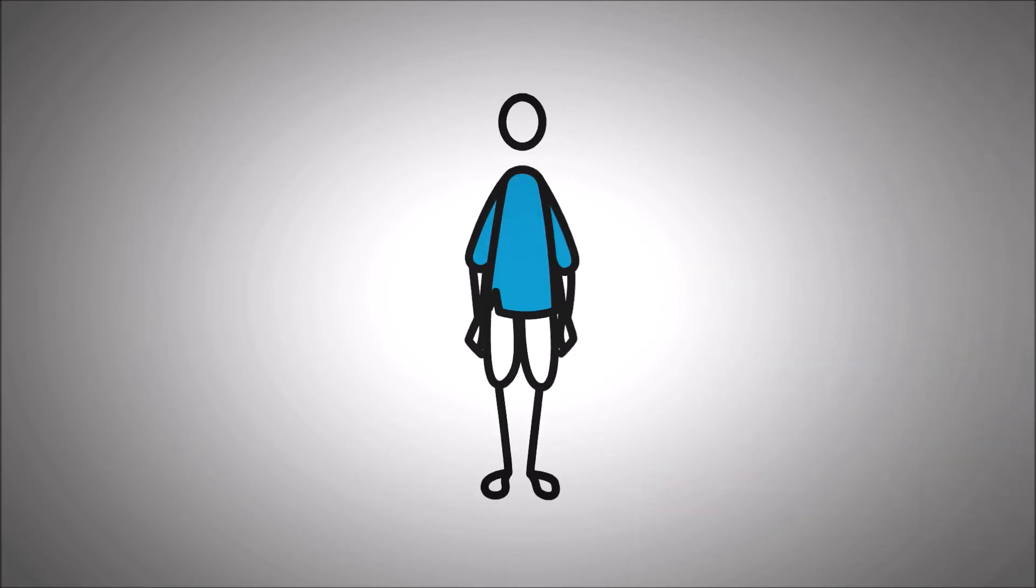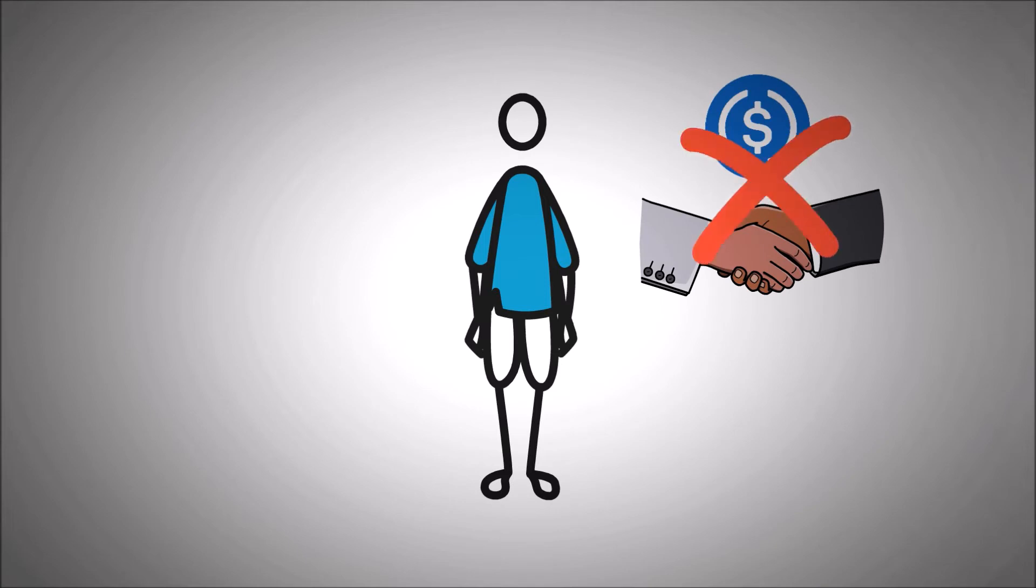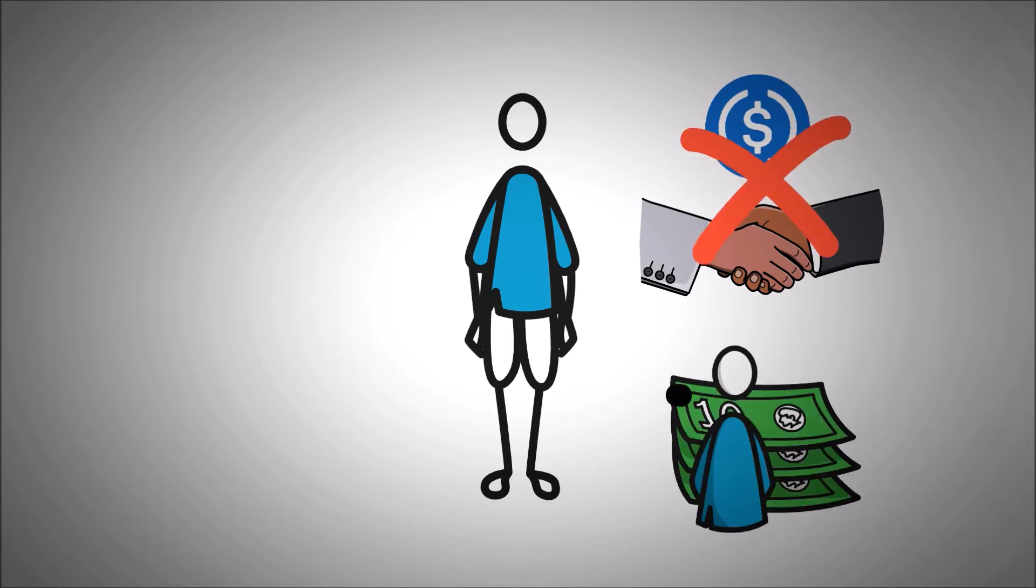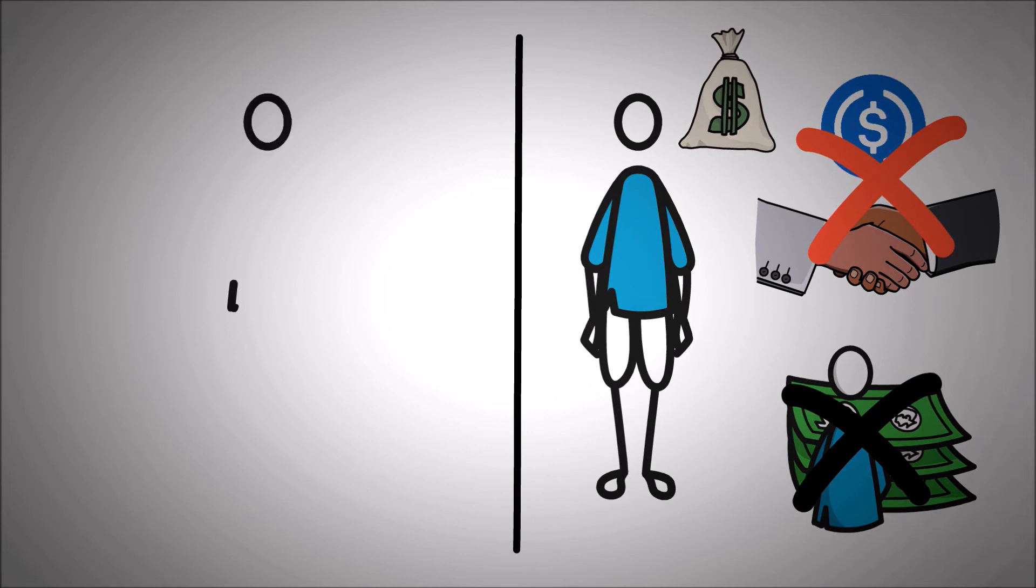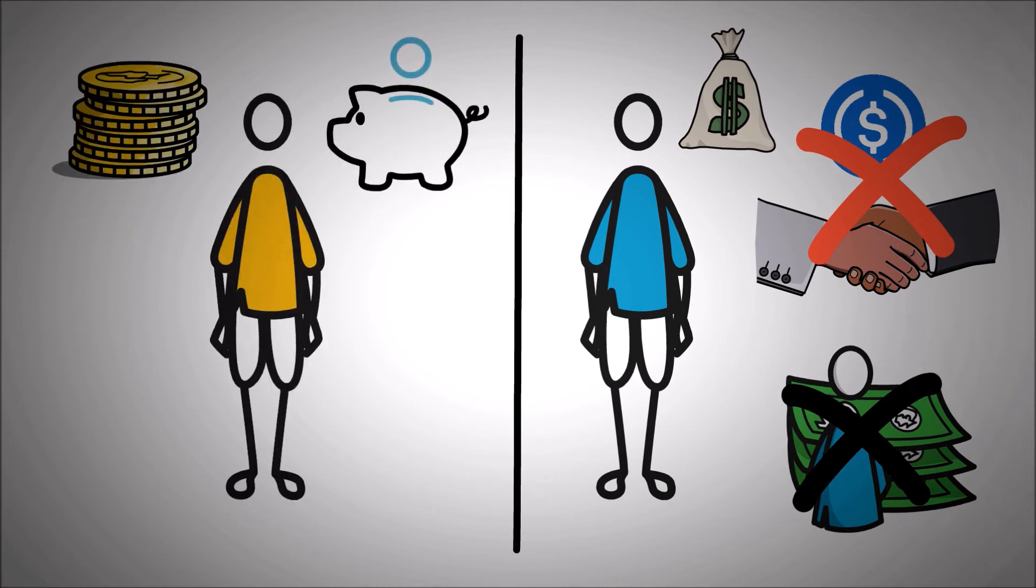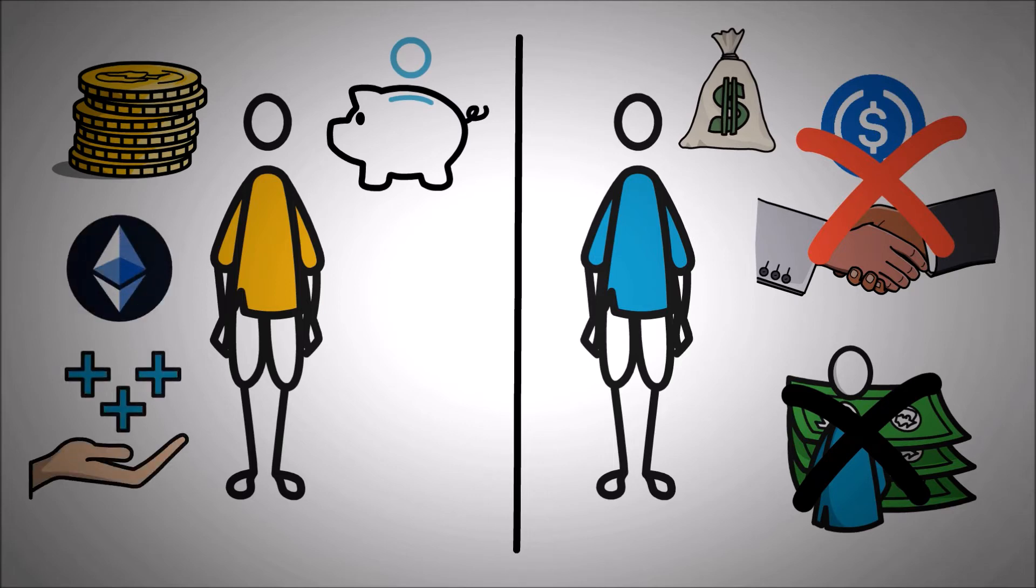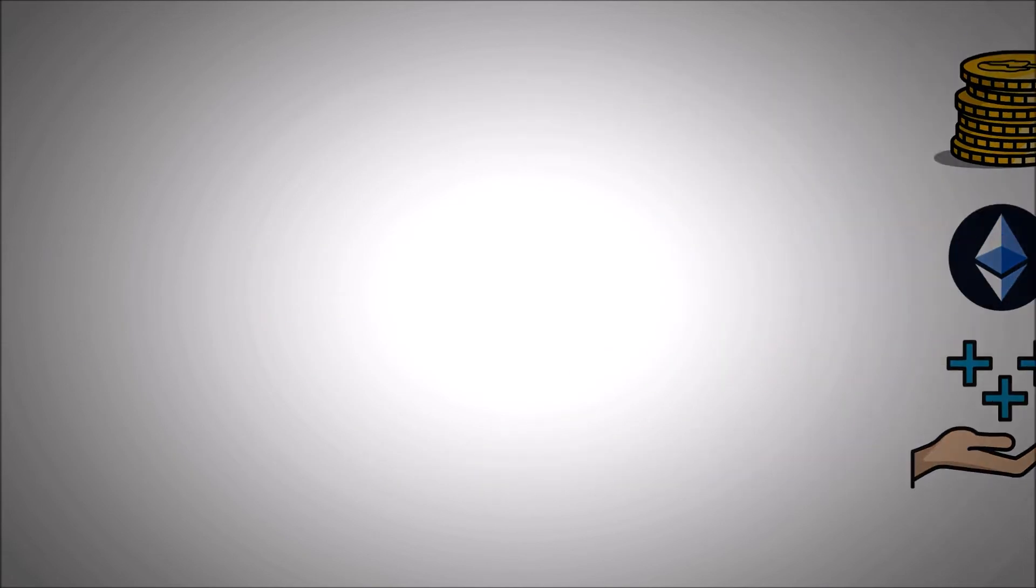In this case, borrower Mr. Trader didn't need to sell his USDC or invest additional money to buy Ether. He was able to earn from his short-term trade of Ether without owning it. Lender Mr. Investor, on the other hand, earned interest from his holding while also benefiting from the appreciation and the value of Ether while he was at it.